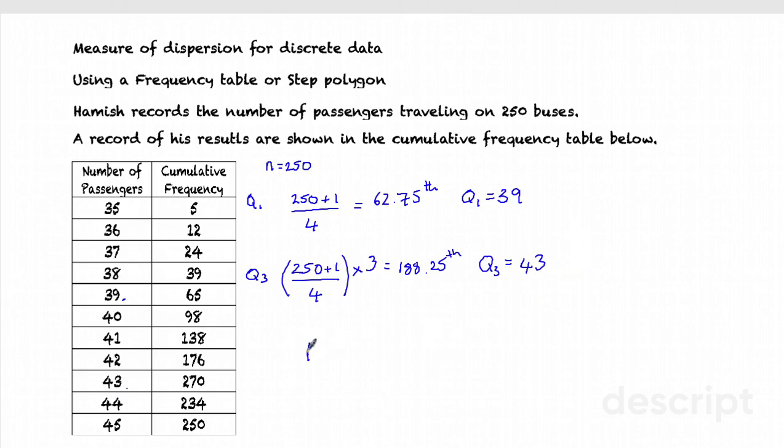So the interquartile range, the IQR interquartile range, will be the largest of those values, Q3, minus the smallest, Q1. That will give me 43 minus 39, which is the value of 4. That's a measure of how spread out my data is based on the quartiles.